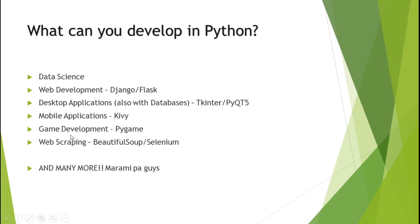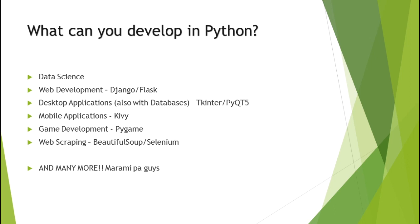For game development, if you want to make a game, you have Pygame. Though if you want to be a serious game developer, Unity — which uses C# — might be a better option. Also, web scraping: basically, it's getting data from websites. For example, on Lazada, if you searched for gaming keyboards and want to collect the prices of each one, that's web scraping — getting data from the HTML code of a webpage.